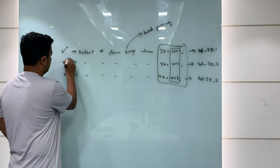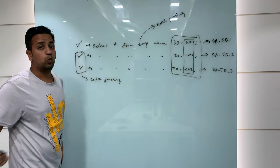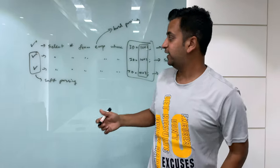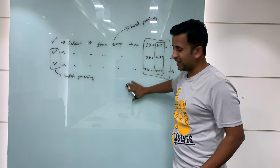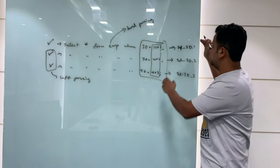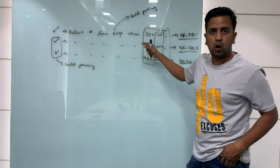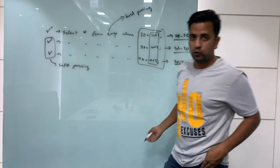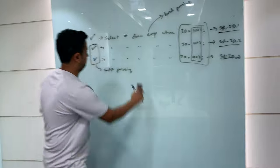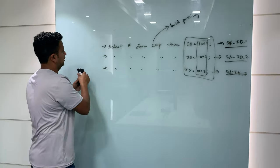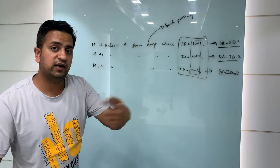The question is: how do you achieve soft parsing here? These SQL statements are exactly the same structure — only the WHERE condition value differs — yet Oracle generates different SQL IDs because even a single character difference causes Oracle to create a new SQL ID. The solution to avoid hard parsing is very simple: use bind variables.